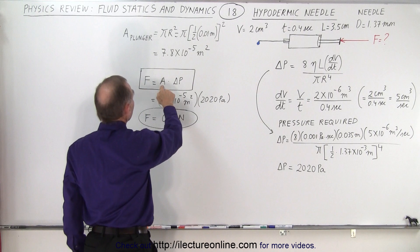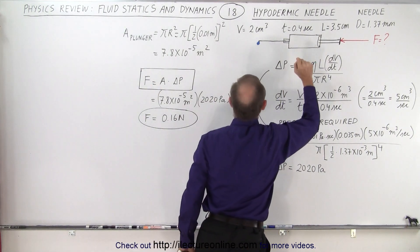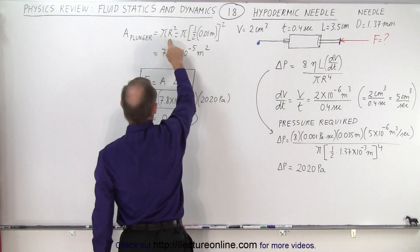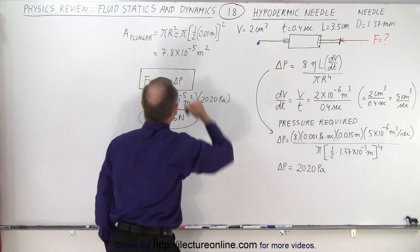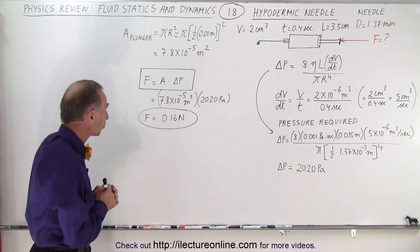So the cross-sectional area of the plunger can be found by simply going pi r squared. If you know the radius of the plunger then it's simply easy to find the cross-sectional area of the plunger.